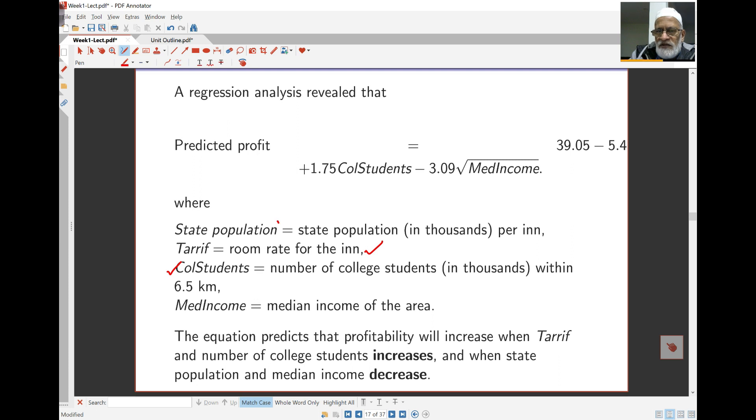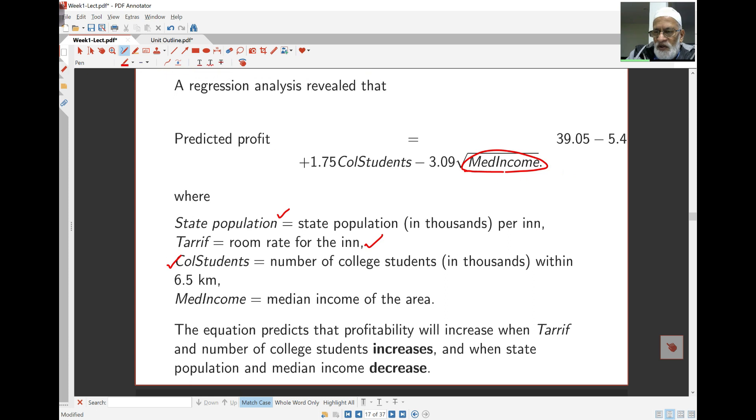You might expect that the tariff will have some impact on the profit. You might also maybe guess that college students might have some effects, although you might wonder why. But how on earth would they pick up something like state population? And more than that, not just median income, but the square root of median income. How to pick up these kinds of things in a model? This is the kind of thing we'll be looking at. How do you actually select variables to be in the model and how you transform the variables to make the model work? It does predict that the profit will increase when the tariff and the number of college students increases. Those are the positive coefficients. And when the state population and median income decrease.